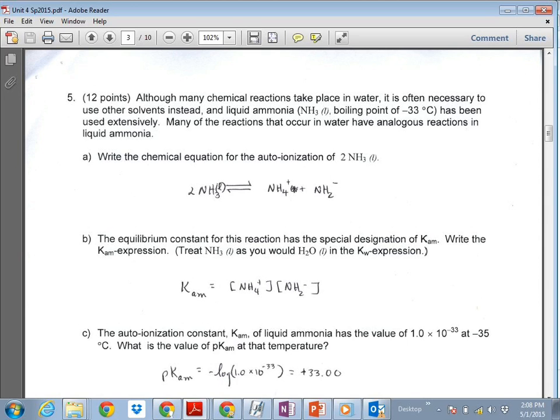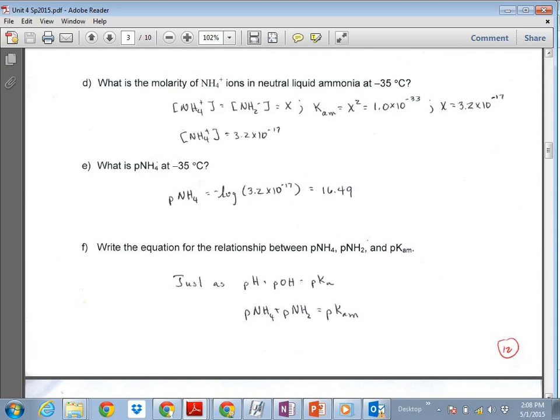On down to the next one. D is what would be the molar concentration at that temperature that we know the pKAM of. And basically, you're going to take the square root of that KAM, not pKAM, the square root of KAM to get that molar concentration. So what would the p function of the ammonia ion be at that temperature? Take the negative log of that number that you got in D. And then for question F, what would be the relationship between the pKAM and the p?